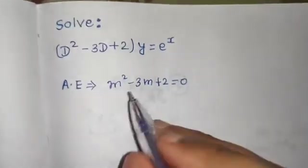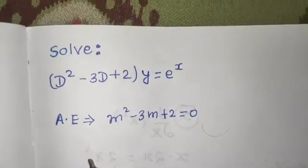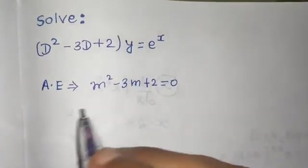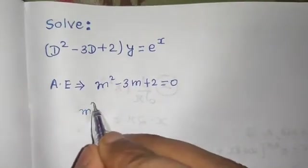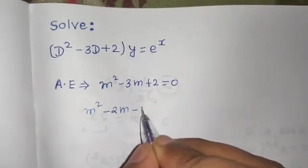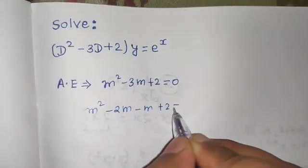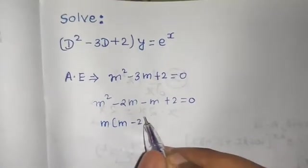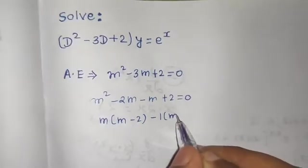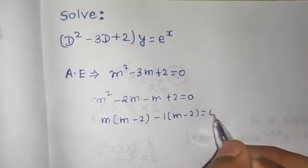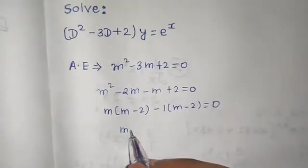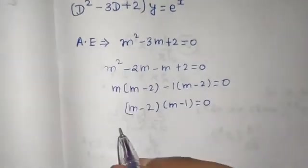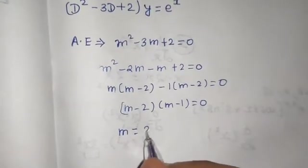Find its roots. So we can solve it easily: m² - 2m - m + 2 = 0. If you take m common you will get (m - 2), you take -1 common you will get (m - 2) = 0. So from here (m - 2)(m - 1) = 0. So you are getting m as 2 and 1.